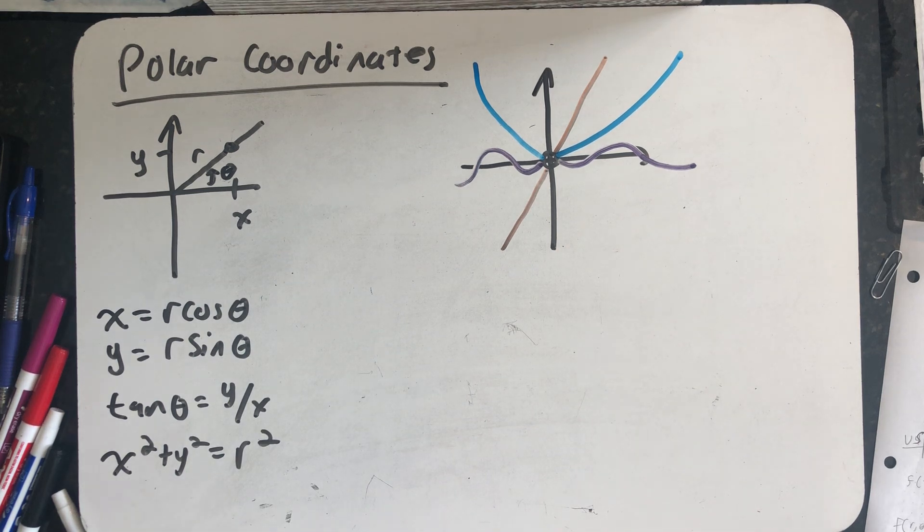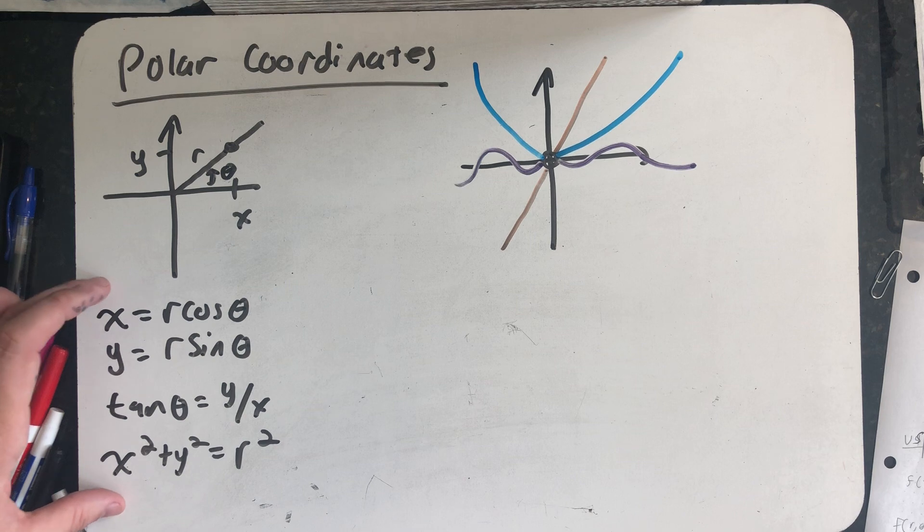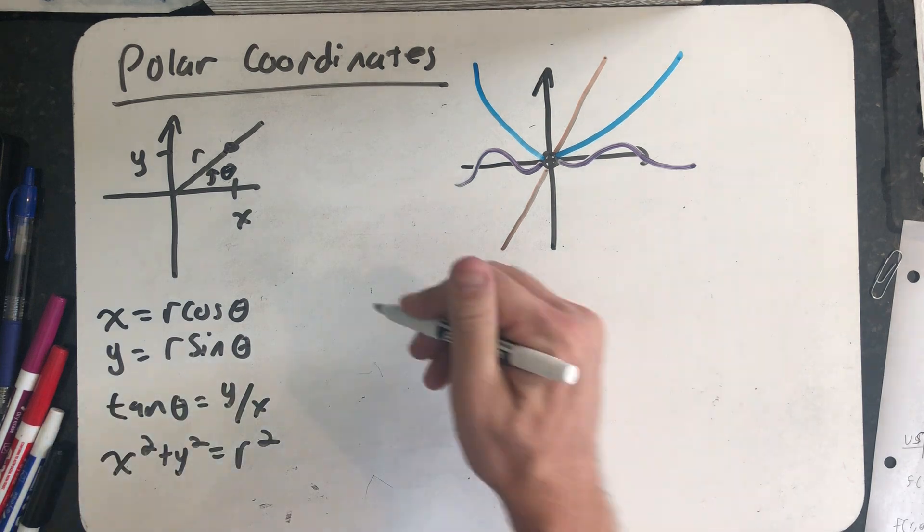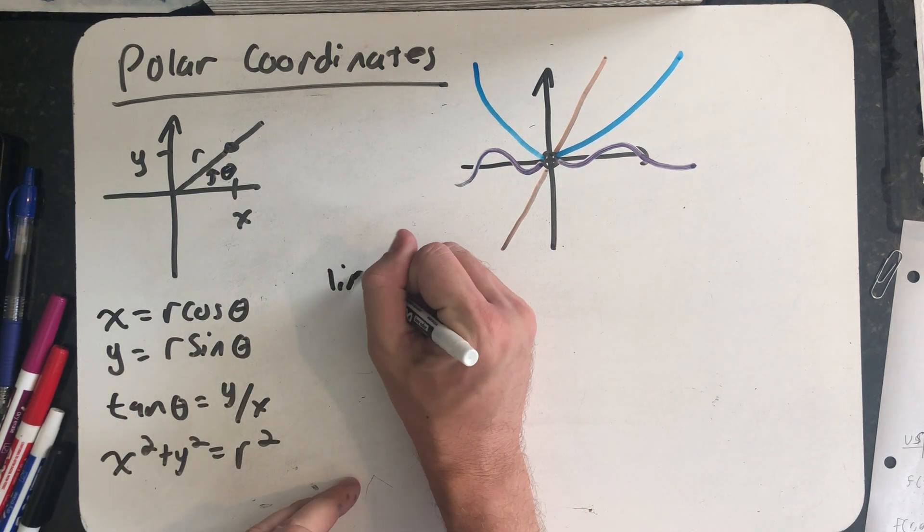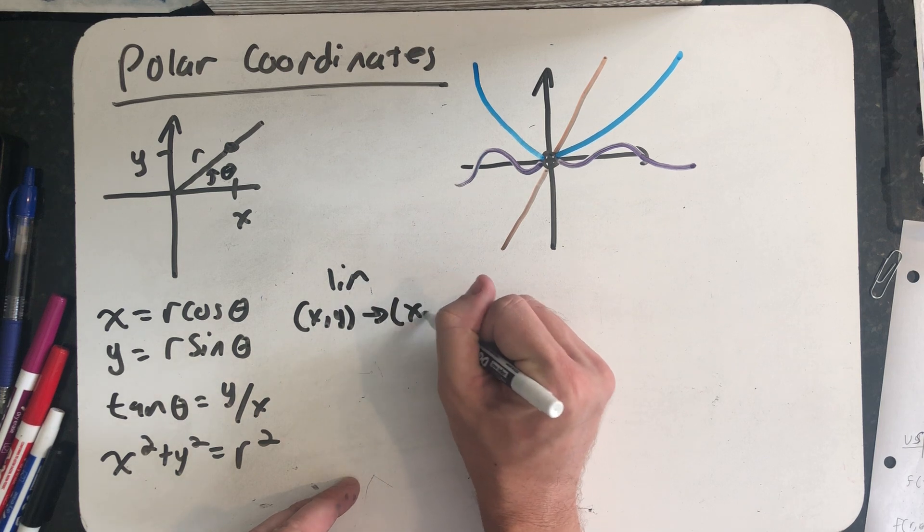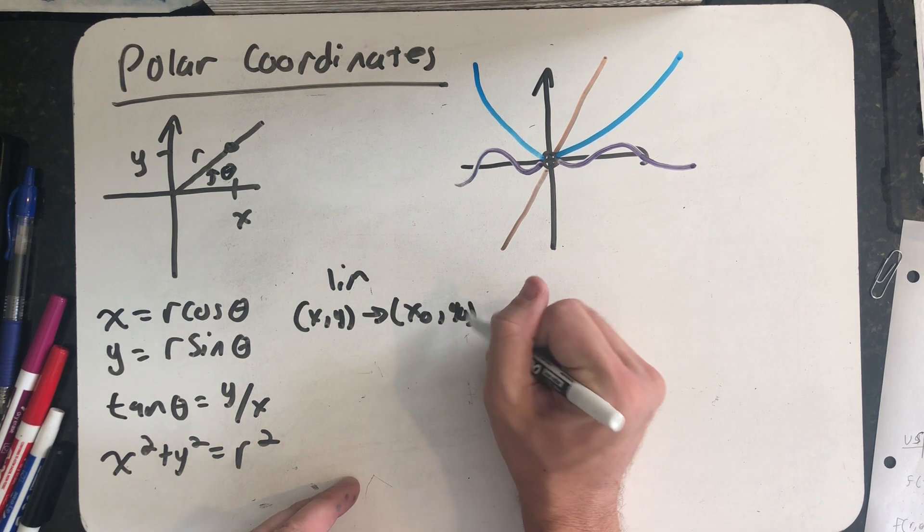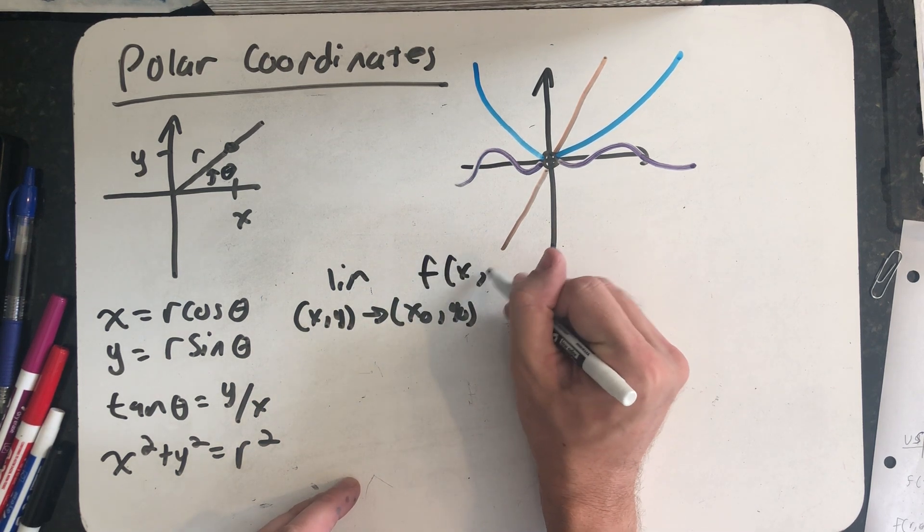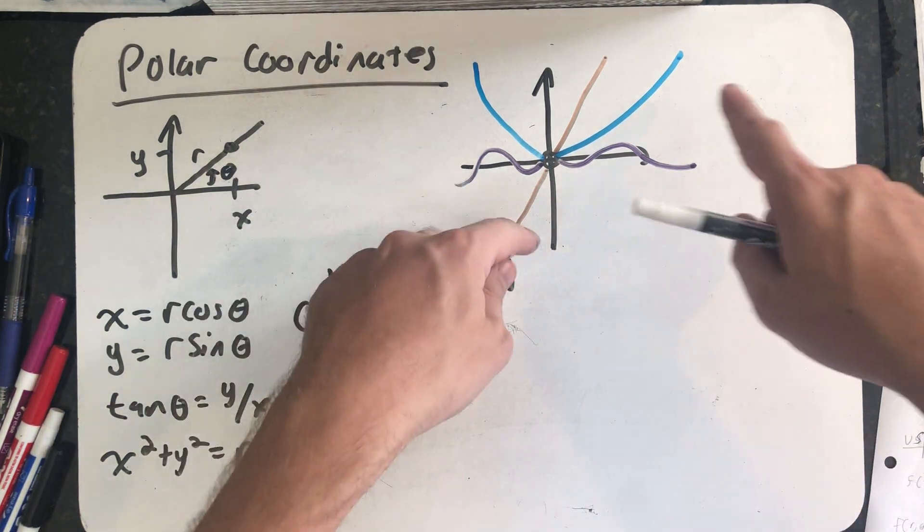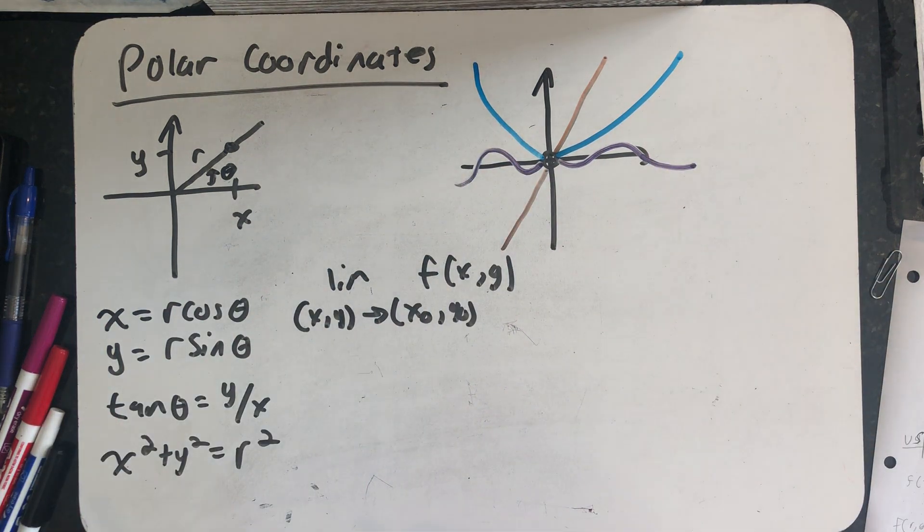The relationships between polar and rectangular coordinates are here. Why might this be useful in evaluating a limit of a function on more than one variable? Well, for this limit to exist, I have to be able to show that I get the same value no matter what path I approach.